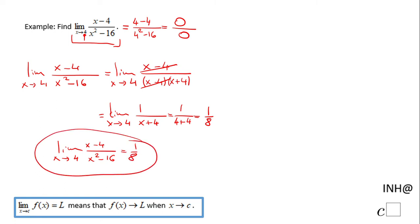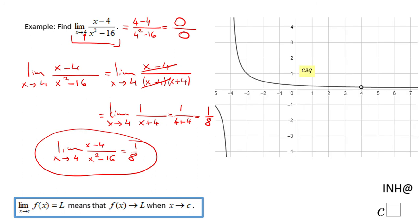Let's take a look a little bit to the graph. This is the graph of (x - 4) / (x² - 16) and you notice we have a hole here. When we get closer to 4, the function is not defined at 4, but when you get closer to 4 we get to this value.